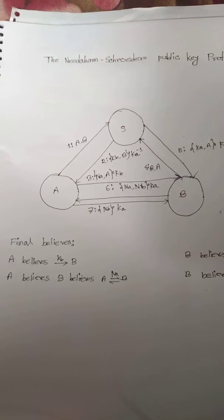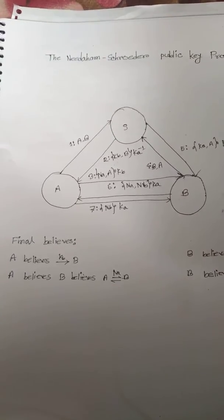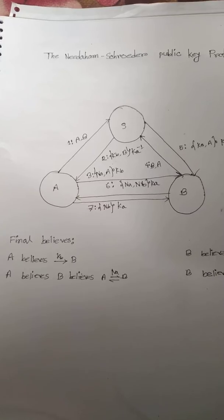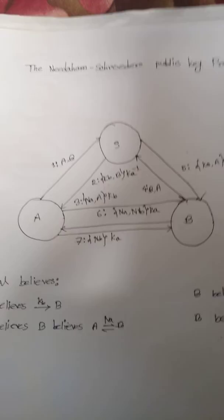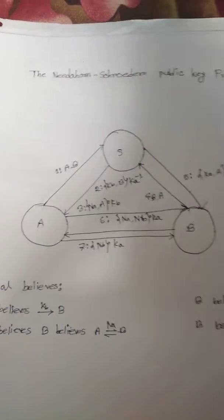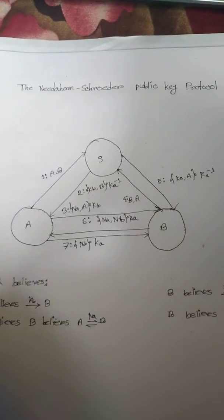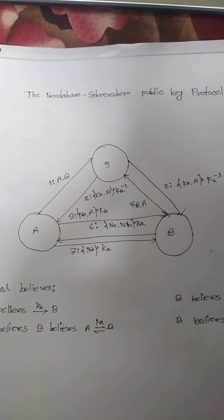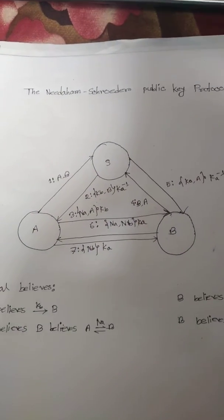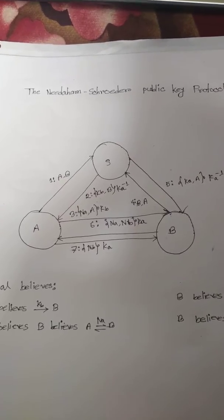A encrypts with S's public key, keeps the message, and obtains B's public key. In step three, A has B's public key and can send a message to B.